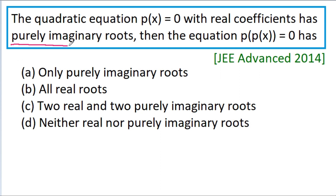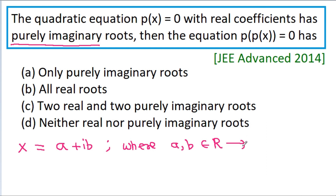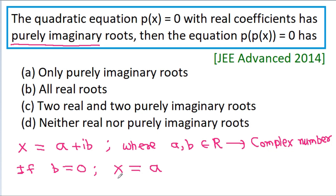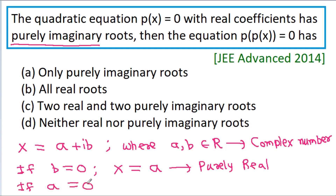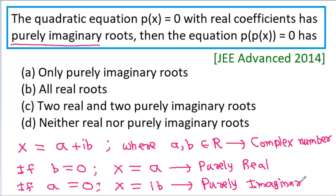Any number x = a + ib, where a and b are real, is called a complex number. If b = 0, then x = a, which is a purely real complex number. And if a = 0, then x is called a purely imaginary complex number.